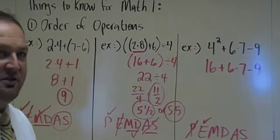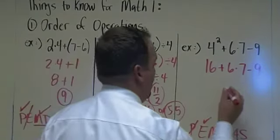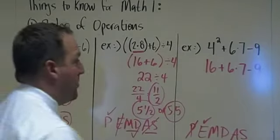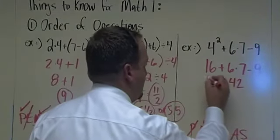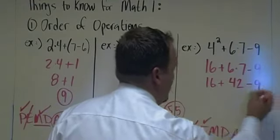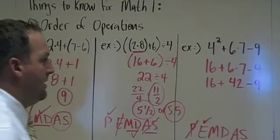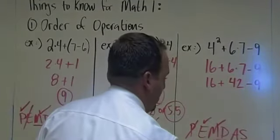Now it's multiplication division. There is a multiplication there. I'm going to multiply 6 times 7. 6 times 7 is 42. Bring down the rest. Plus 16. And then a minus 9 on the end. All the multiplication and division are taken care of.